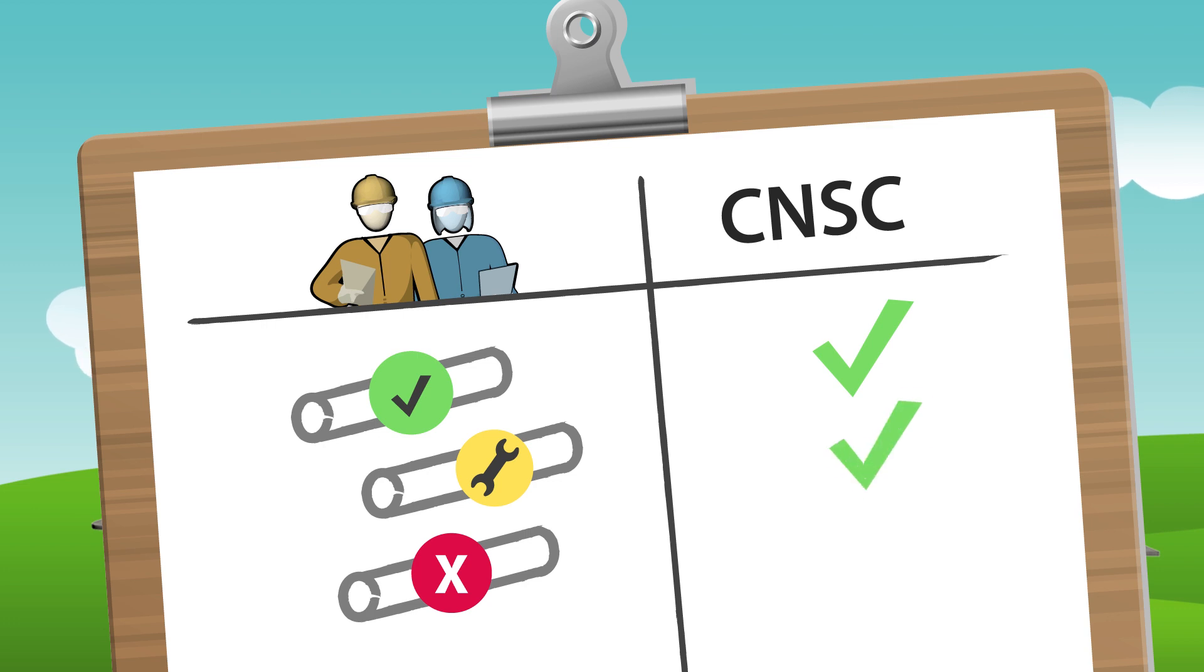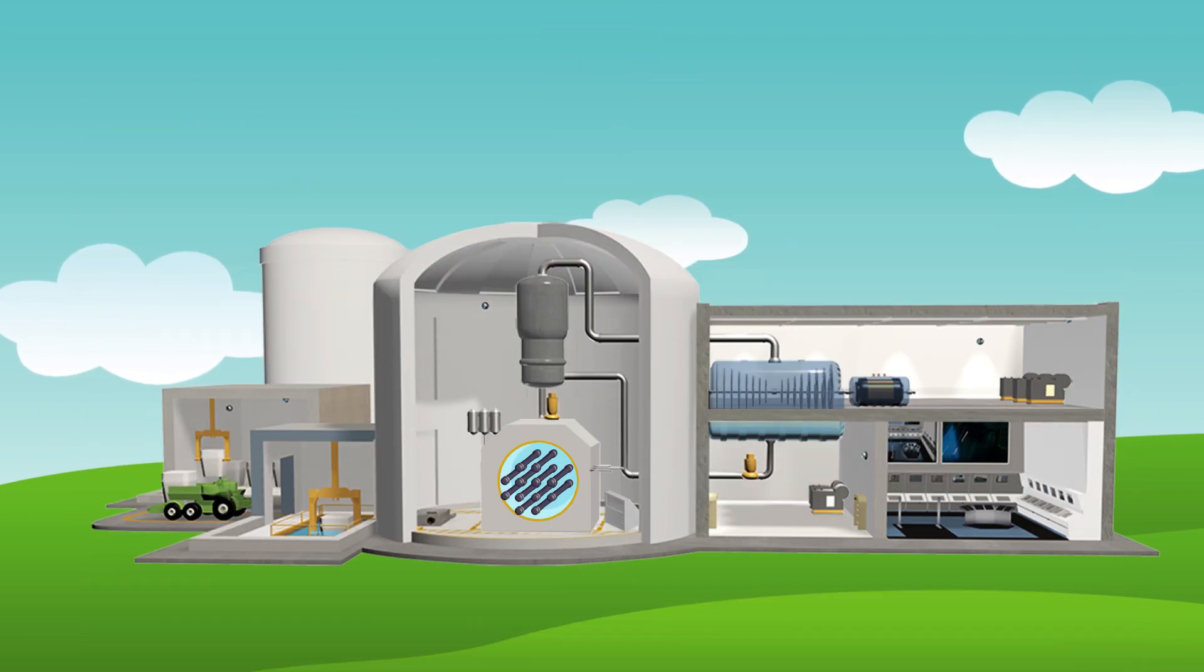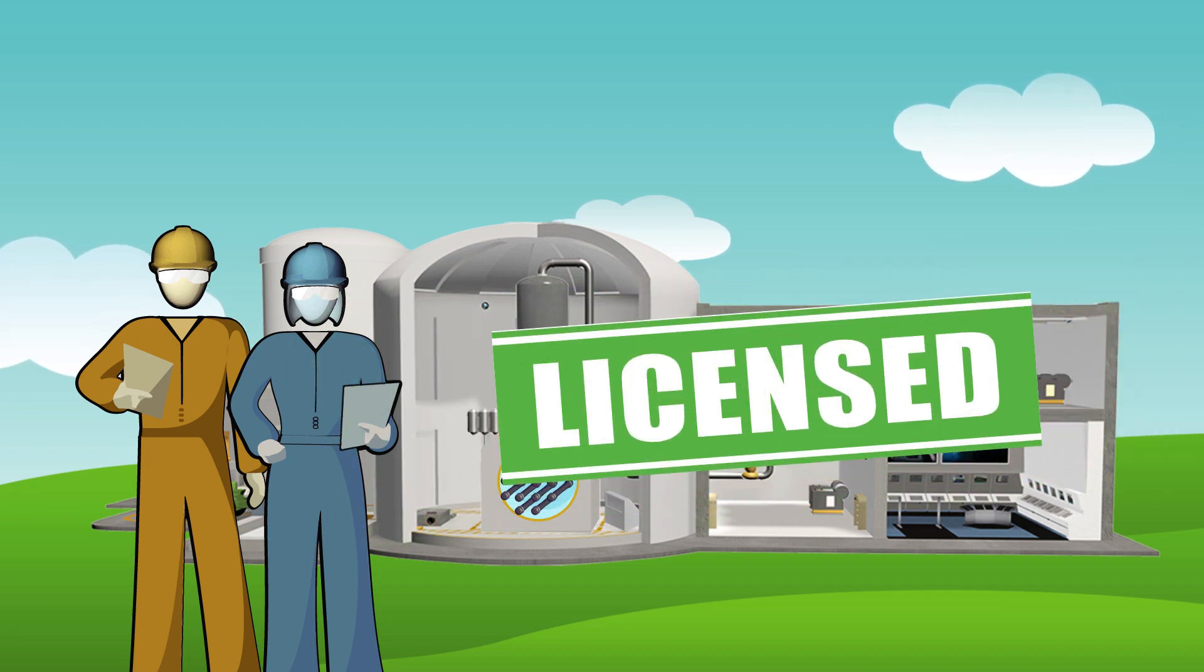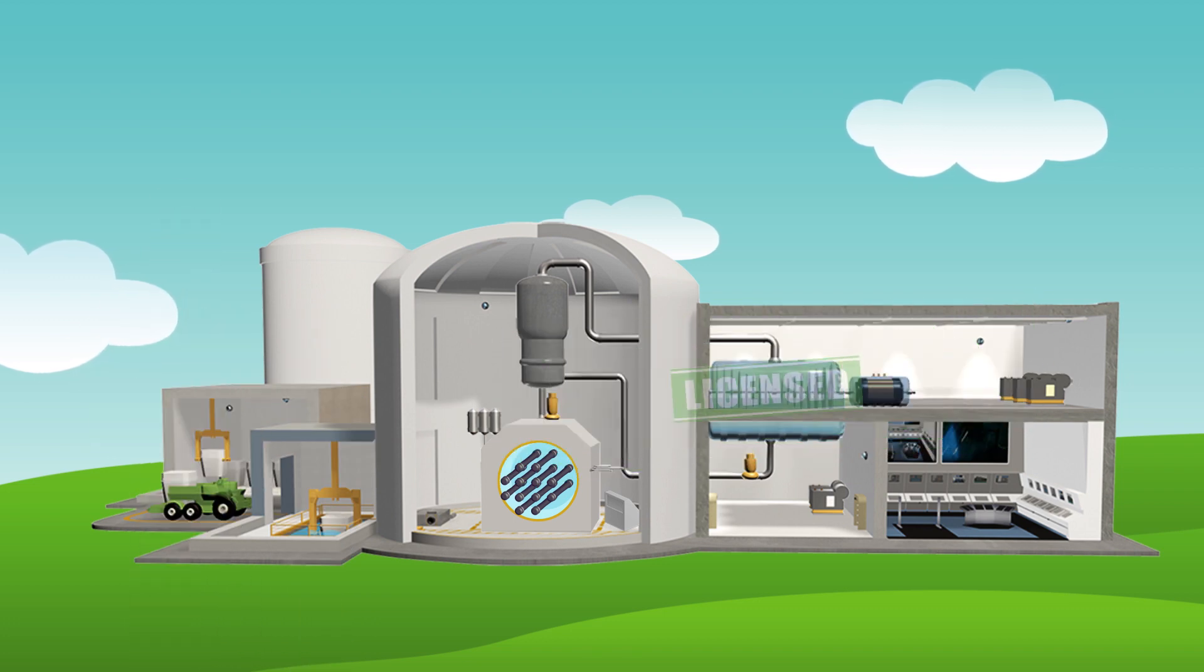CNSC staff review and evaluate the data provided by the licensee to confirm that pressure tubes meet operational standards. The CNSC, Canada's nuclear regulator, ensures comprehensive and rigorous oversight. We will only issue a license when we are confident that a nuclear power plant is and will remain safe to operate.